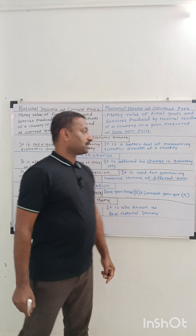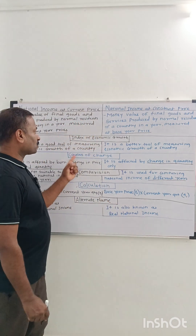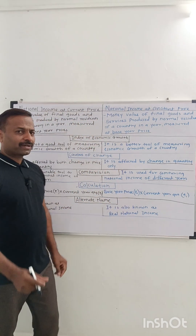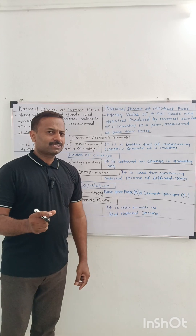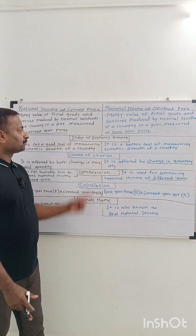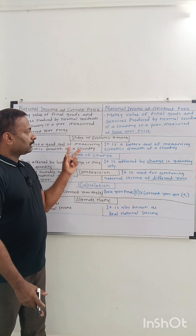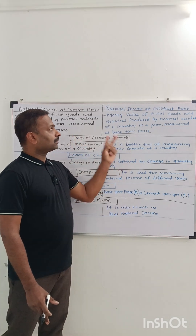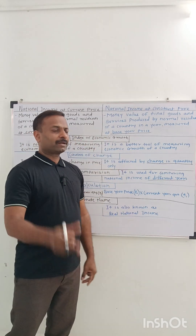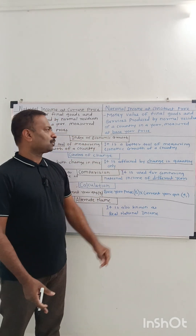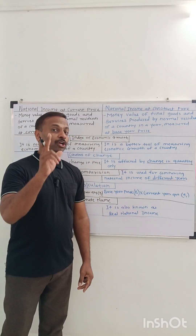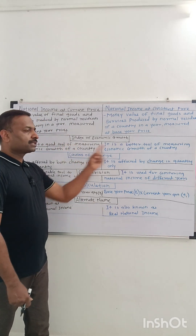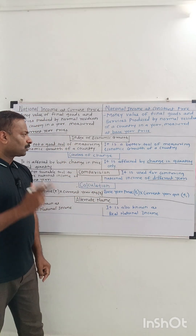The second point is: what is the index of economic growth? National income at current prices is not a good indicator or tool of showing economic growth. But national income at constant prices — that is, real income — is a better tool of measuring economic growth. So current price is not a good tool; constant price is a better tool.